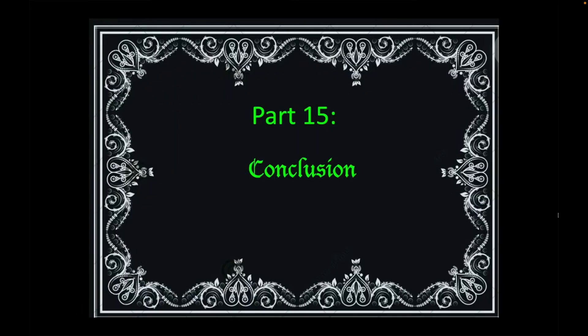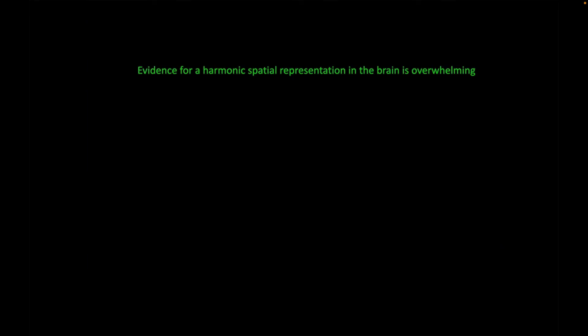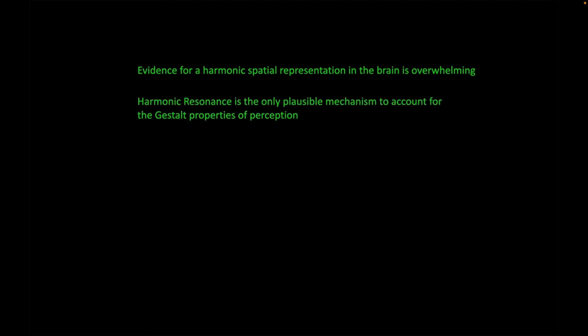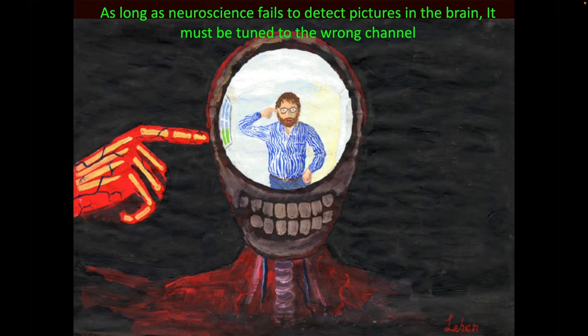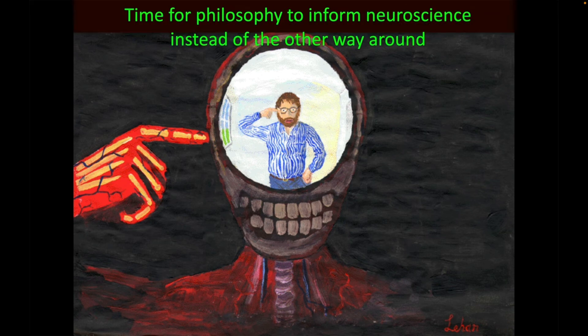Part 15: Conclusion. The evidence for a harmonic spatial representation in the brain is overwhelming. Harmonic resonance is the only plausible mechanism to account for the gestalt properties of perception. Music, mathematics, and visual ornament are artifacts of a harmonic resonance representation. As long as neuroscience fails to detect pictures in the brain, it must be tuned to the wrong channel, because I know there are pictures in there — I can see them from the inside. It's time for philosophy to inform neuroscience instead of the other way around.